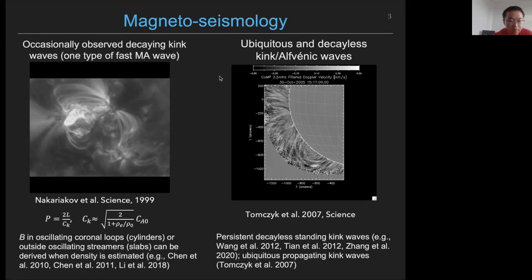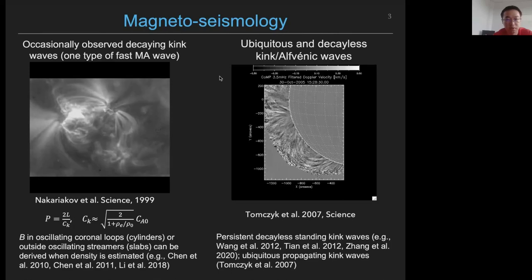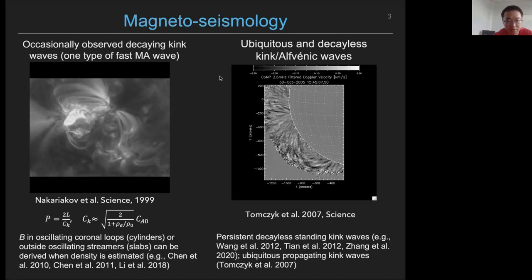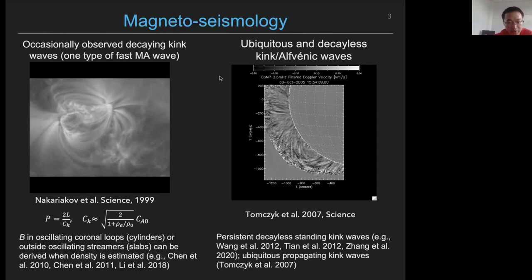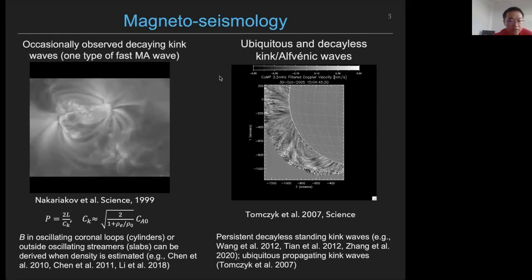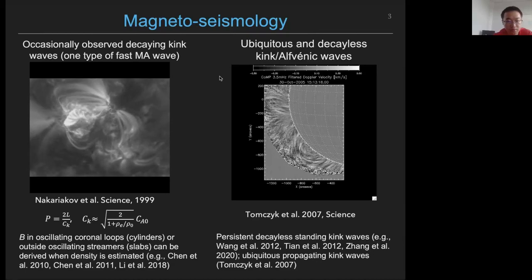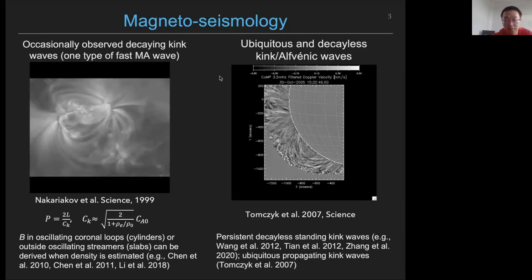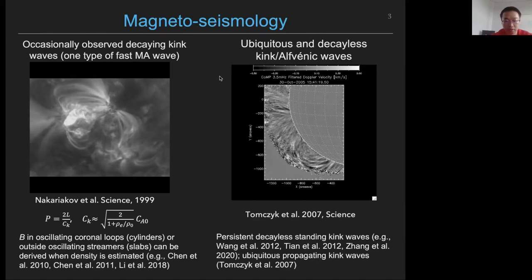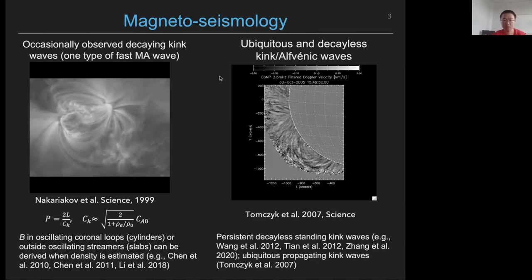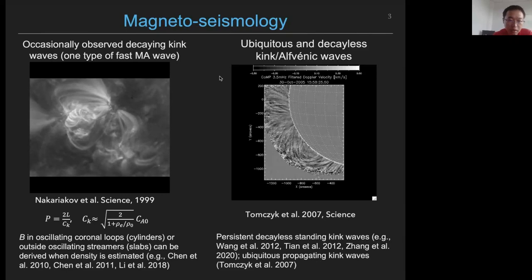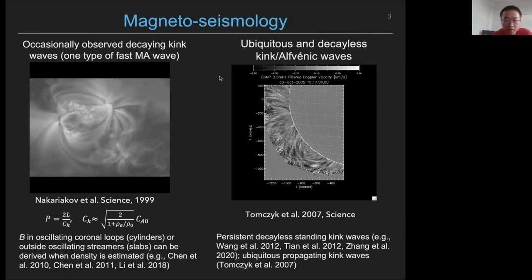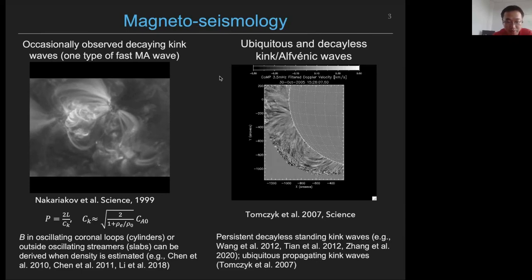However, like the one in the left showing observed waves triggered by a flare, these waves or oscillations are only occasionally observed and will decay very soon. In addition, the inferred magnetic field strength is usually just a single value, often around 10 Gauss. Obviously, the potential for magnetic field diagnostics is very limited. What we really need are continuous diagnostics of coronal magnetic field in different parts of the corona structure, which could be achieved if we apply magnetoseismology to more ubiquitous and continuous oscillations or waves in the corona.